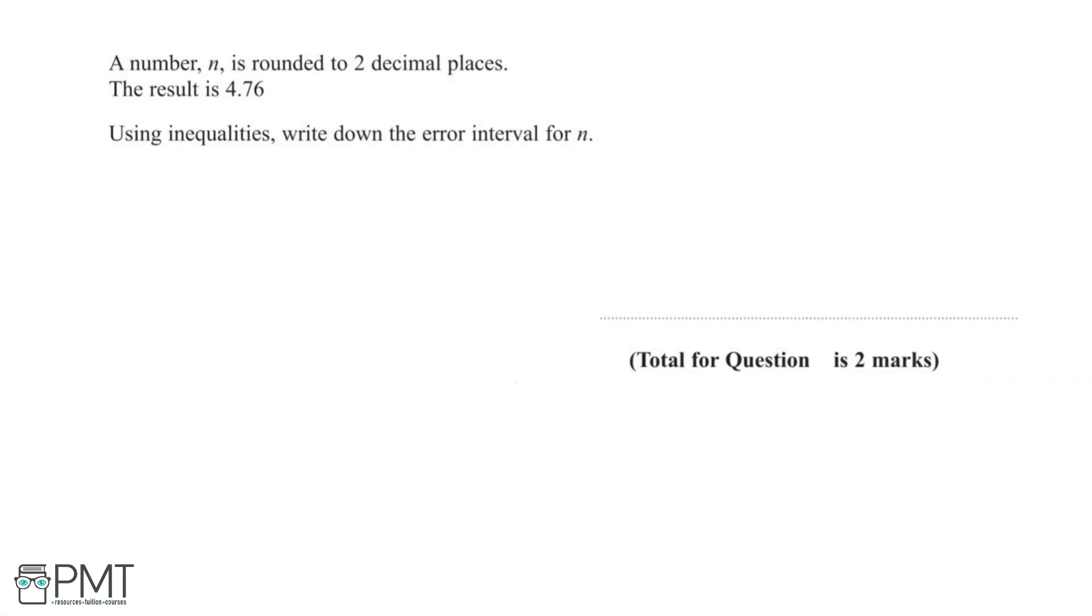In this question, we're told that a number n is rounded to two decimal places and that the result is 4.76. Now, using inequalities, we need to write down the error interval for n, and an error interval tells us the range of numbers that we could have had before the number was rounded.